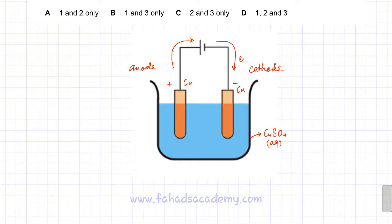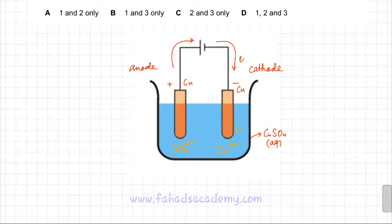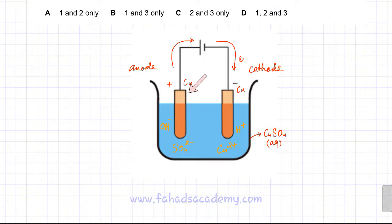The solution contains two ions from copper sulfate: Cu²⁺ and SO₄²⁻. Since Cu²⁺ ions are positively charged, they are attracted to the negative terminal — the cathode. SO₄²⁻, being negative, is attracted to the positive terminal — the anode. Water also provides two ions: H⁺ ions attracted to the cathode, and OH⁻ ions attracted to the anode.